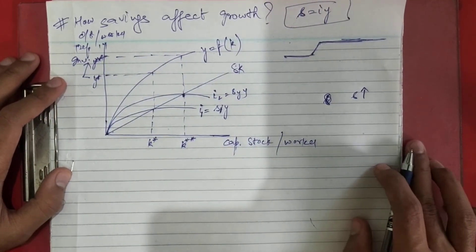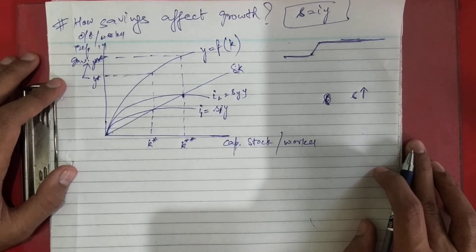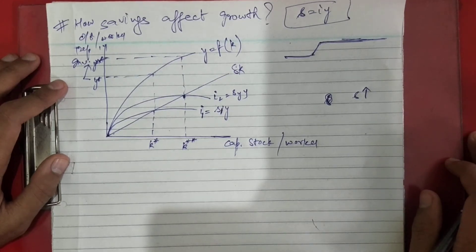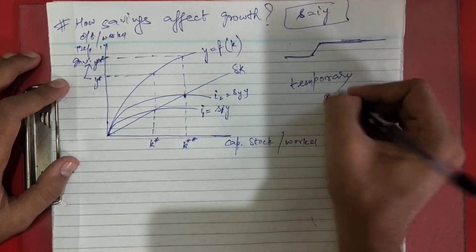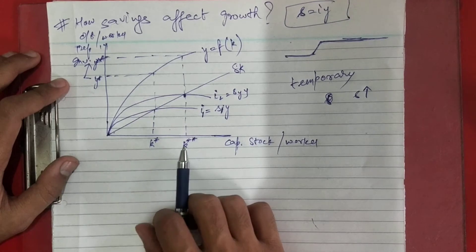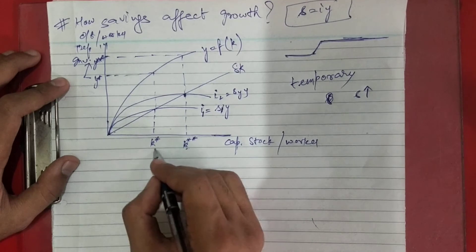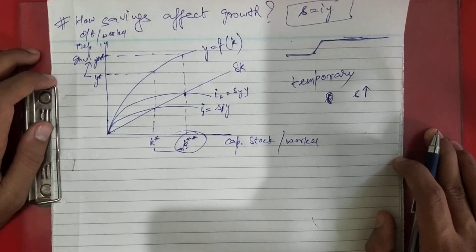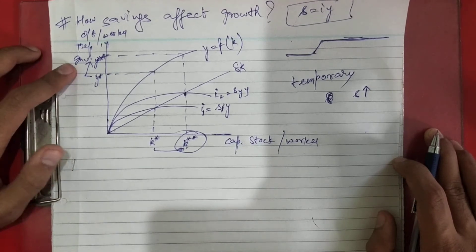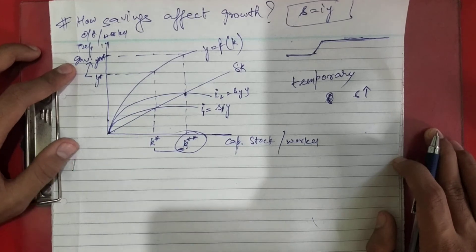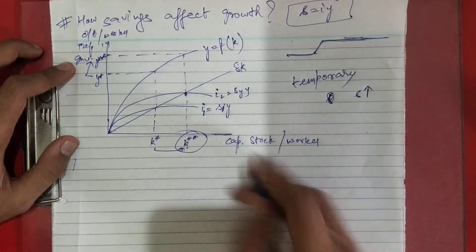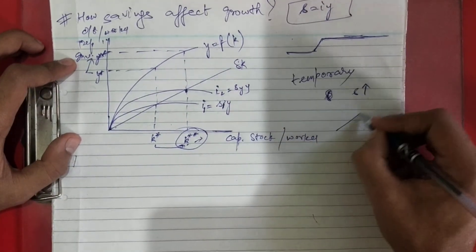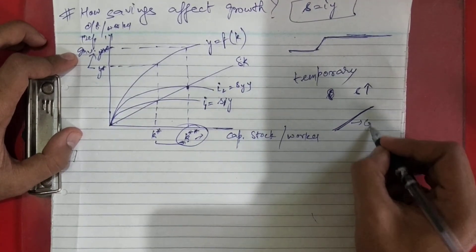Now we have to see whether this is a growth effect or a level effect. In the Solow model, higher saving rates lead to faster growth, but it is only temporary. Once the economy attains the new steady state, growth will eventually stop. However, with a higher saving rate the level of output per worker and capital stock per worker will be higher — this is a level effect. A growth effect means growing continuously, whereas a level effect is only temporary.